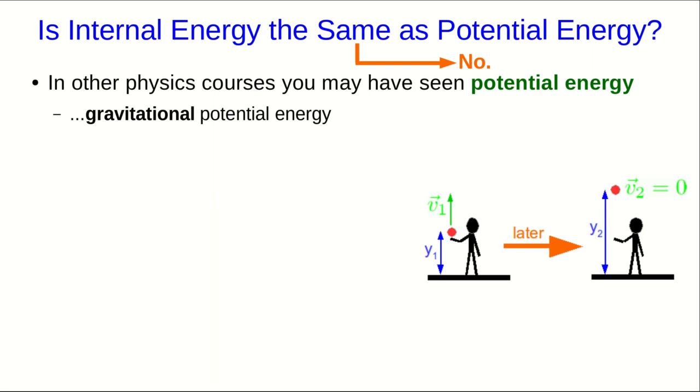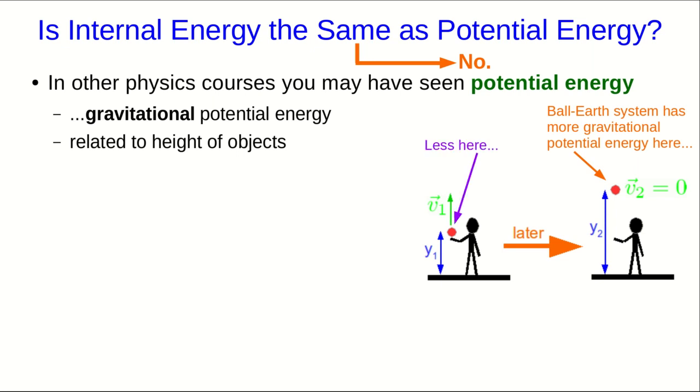So the type of potential energy you've probably seen, if you have seen it at all, is gravitational potential energy, and it's related to the height of objects. So in other words, a ball, or rather the ball-Earth system, has more gravitational potential energy when the ball is high up than it does when the ball is low down.